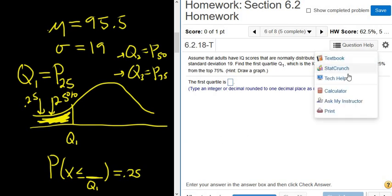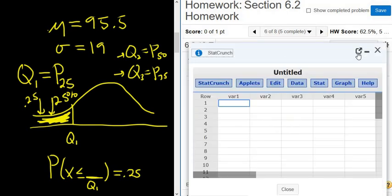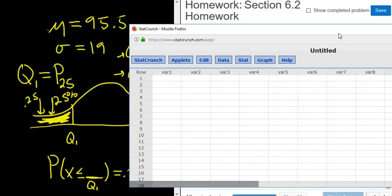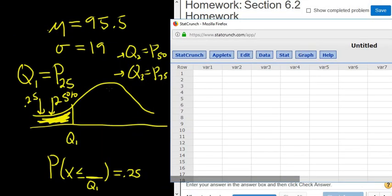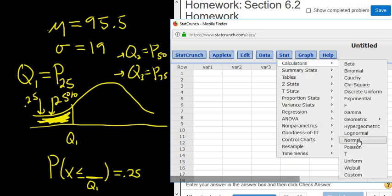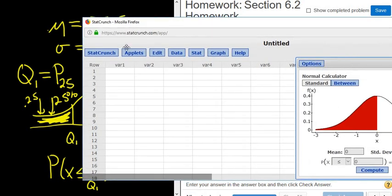Okay, so we go to question help and StatCrunch. And we're just going to use the normal calculator for this problem. So it's basically just finding a percentile. So we go to stat, calculators, normal.